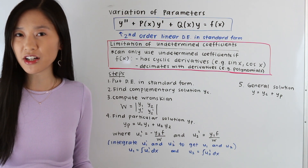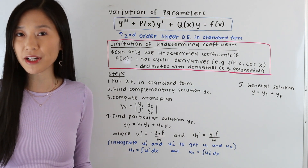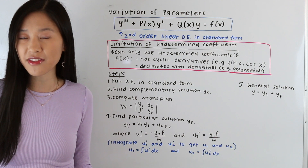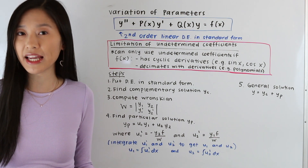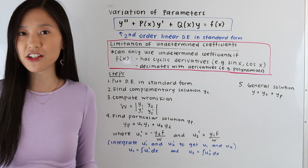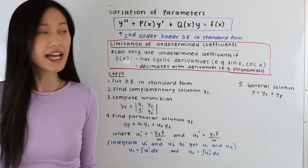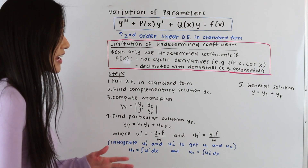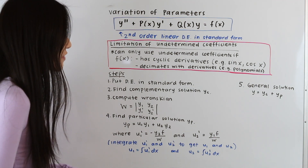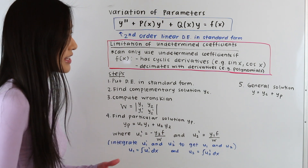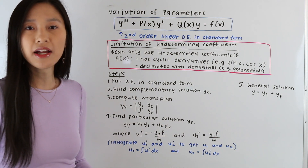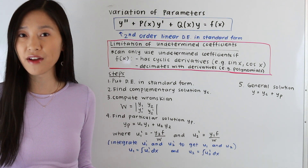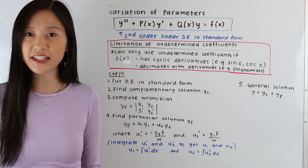In a previous video we learned about the method of undetermined coefficients, where we would make an appropriate guess for the form of yp, plug it into our differential equation, and then solve for our coefficients to get our particular solution. But there is a limitation: it only works if f has cyclic derivatives like sine or cosine, or if f terminates with derivatives, such as with polynomials. So when we don't have one of those two cases, we need to resort to the method of variation of parameters.